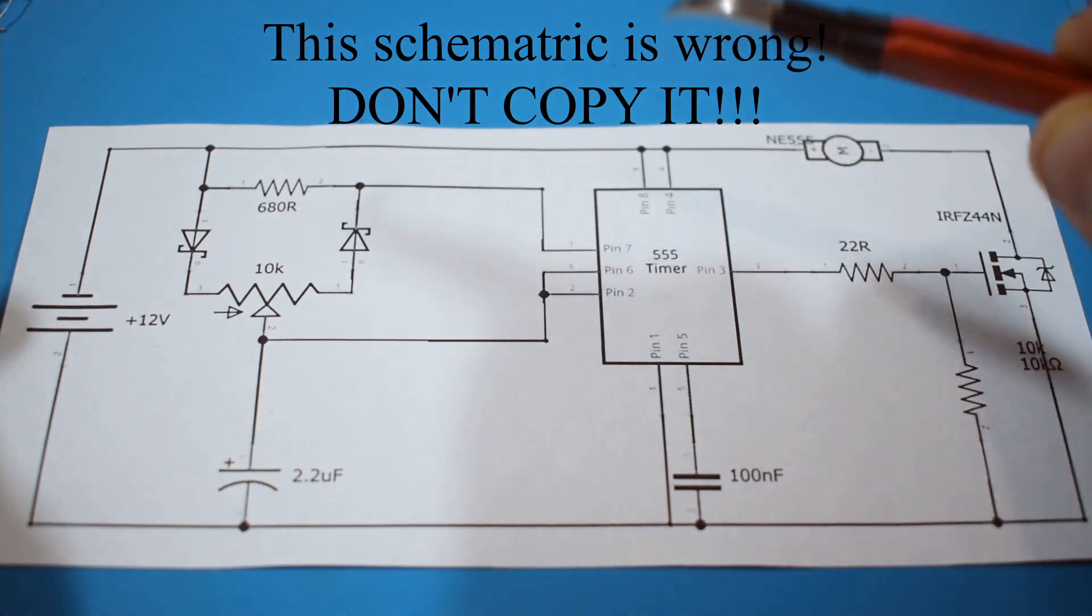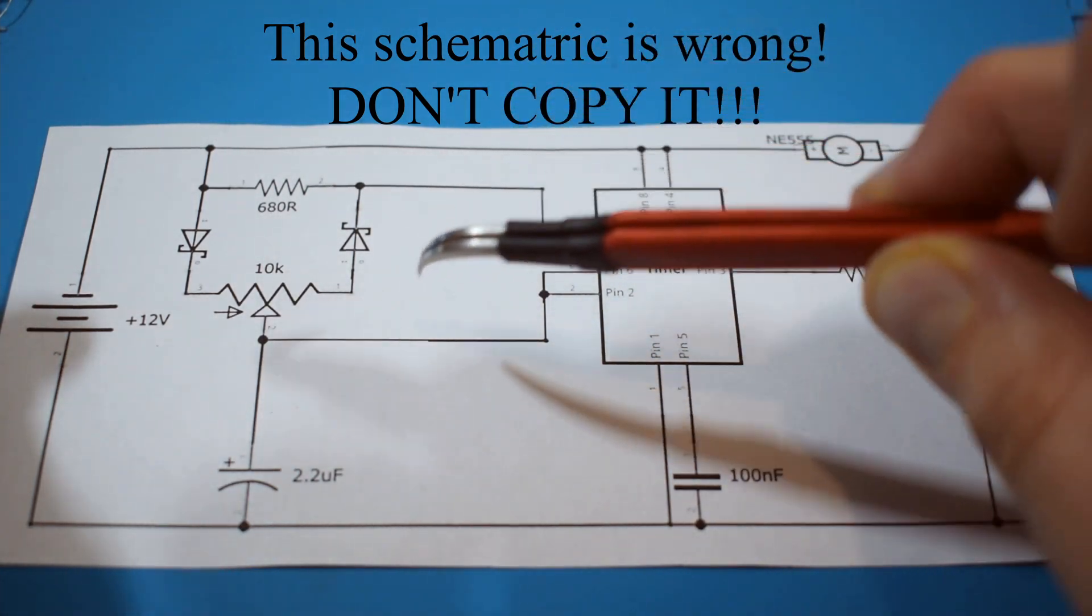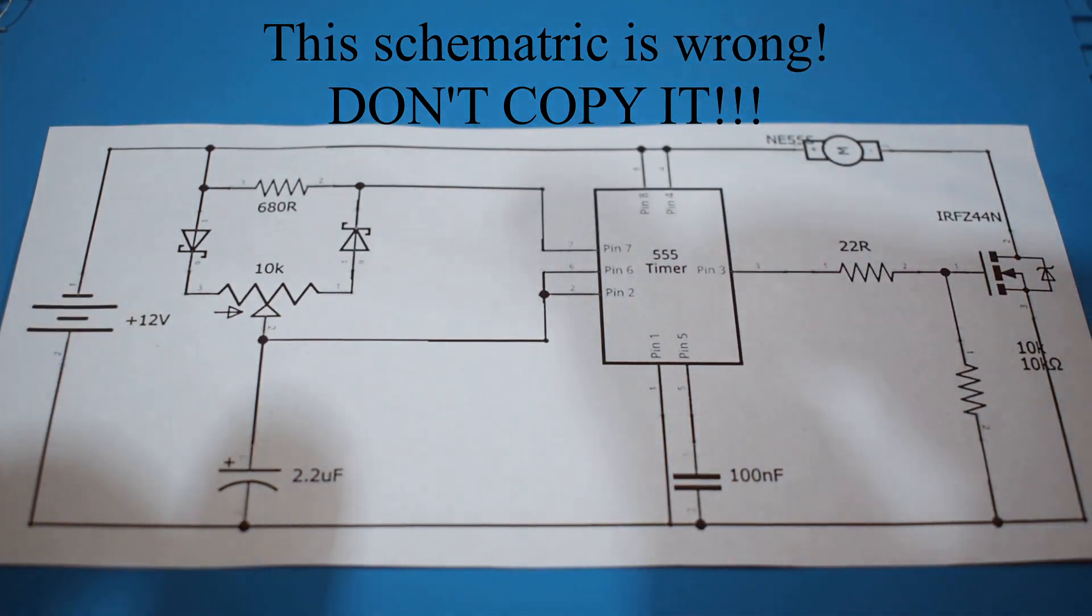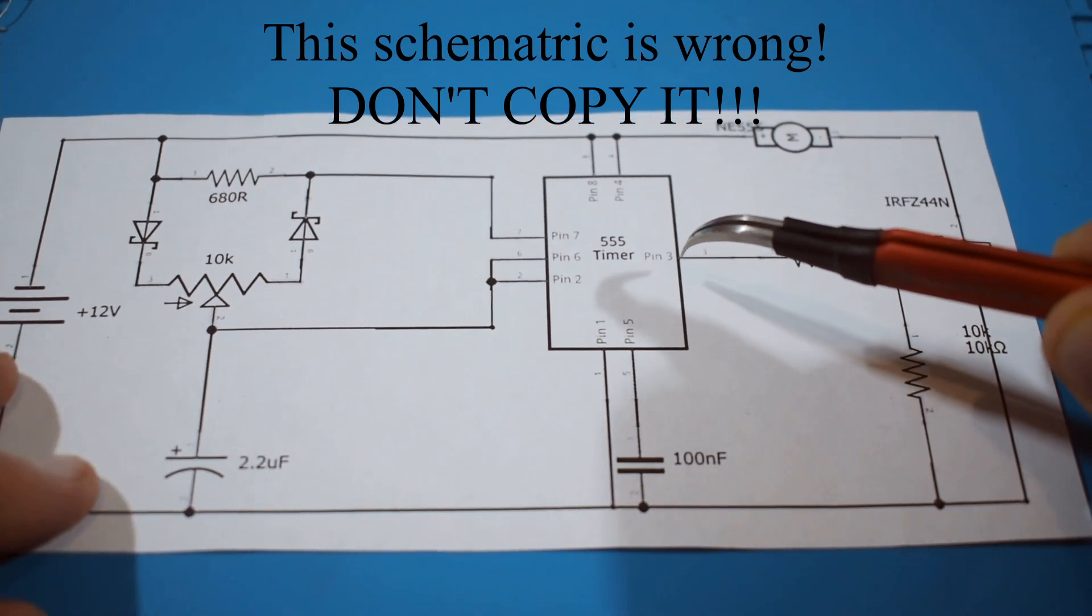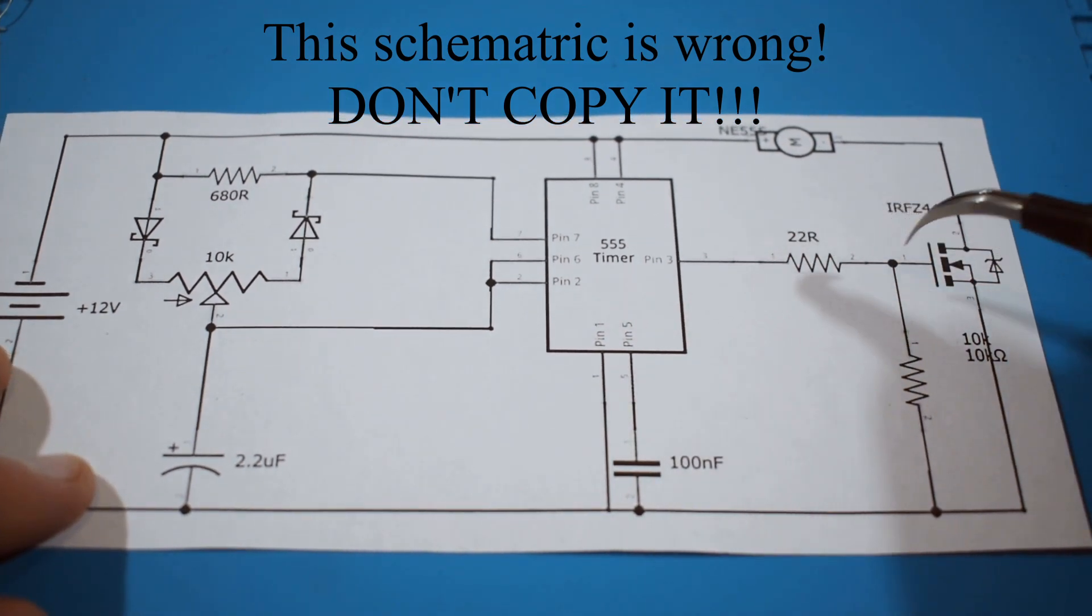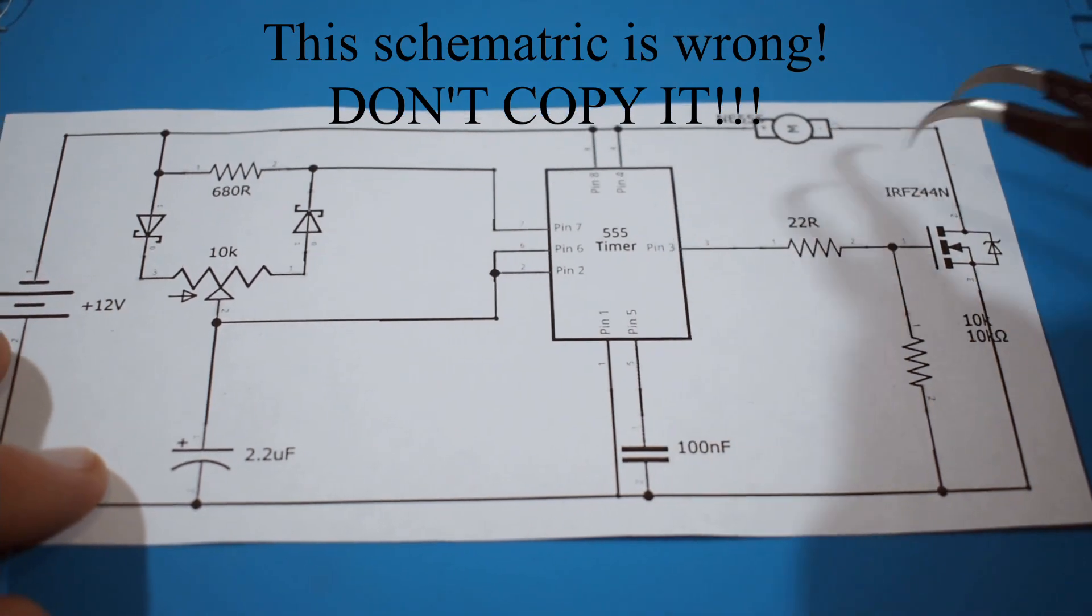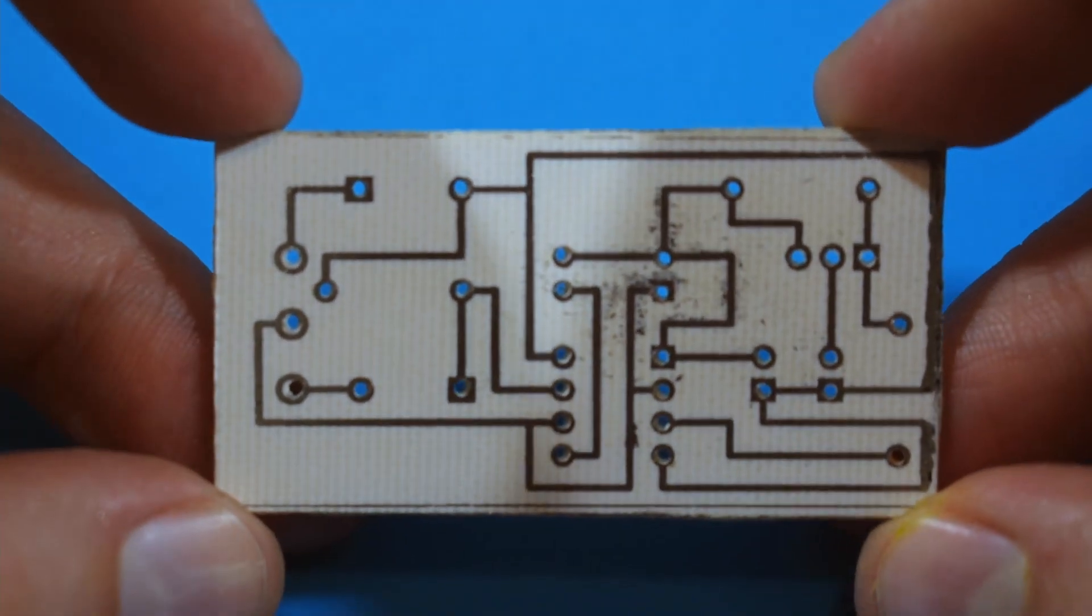And then after, as you can see on the output of pin number three, we have a MOSFET that turns on and turns the motor on and off, thus adjusting its speed. Now why did I go through all the trouble of making my own PCB? Am I gonna start manufacturing this? Well no, because this is a very simple circuit and manufacturing it would be extremely stupid because you can get stuff like this for a buck on Aliexpress.